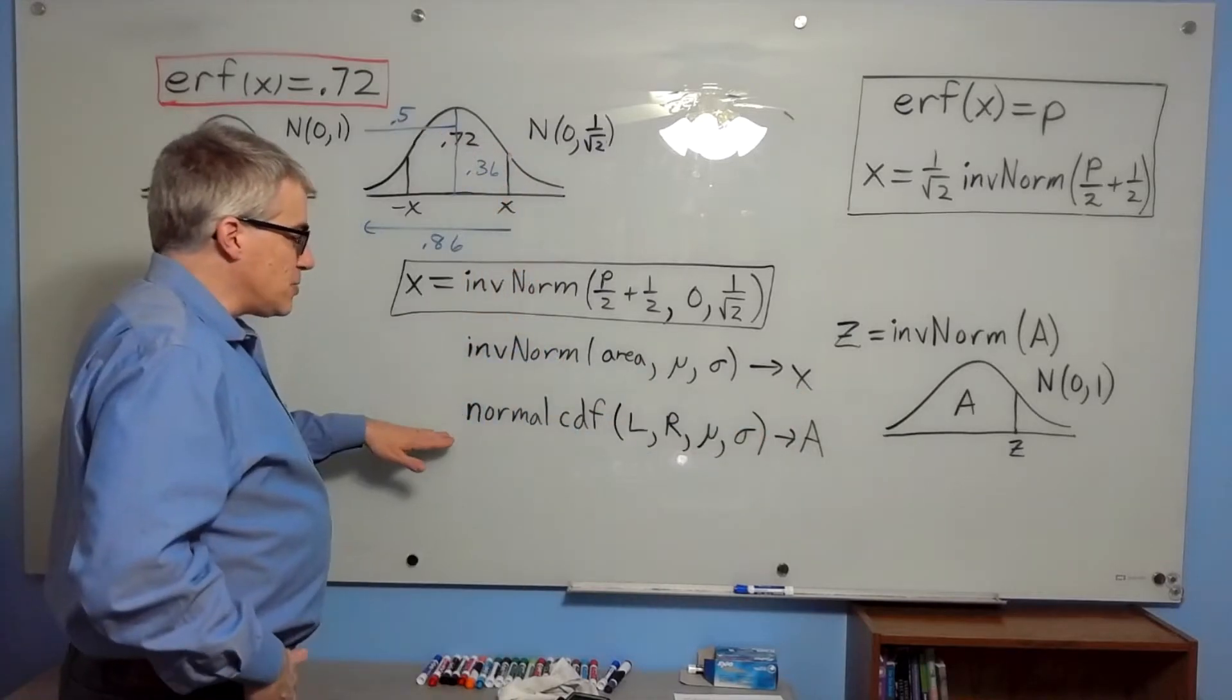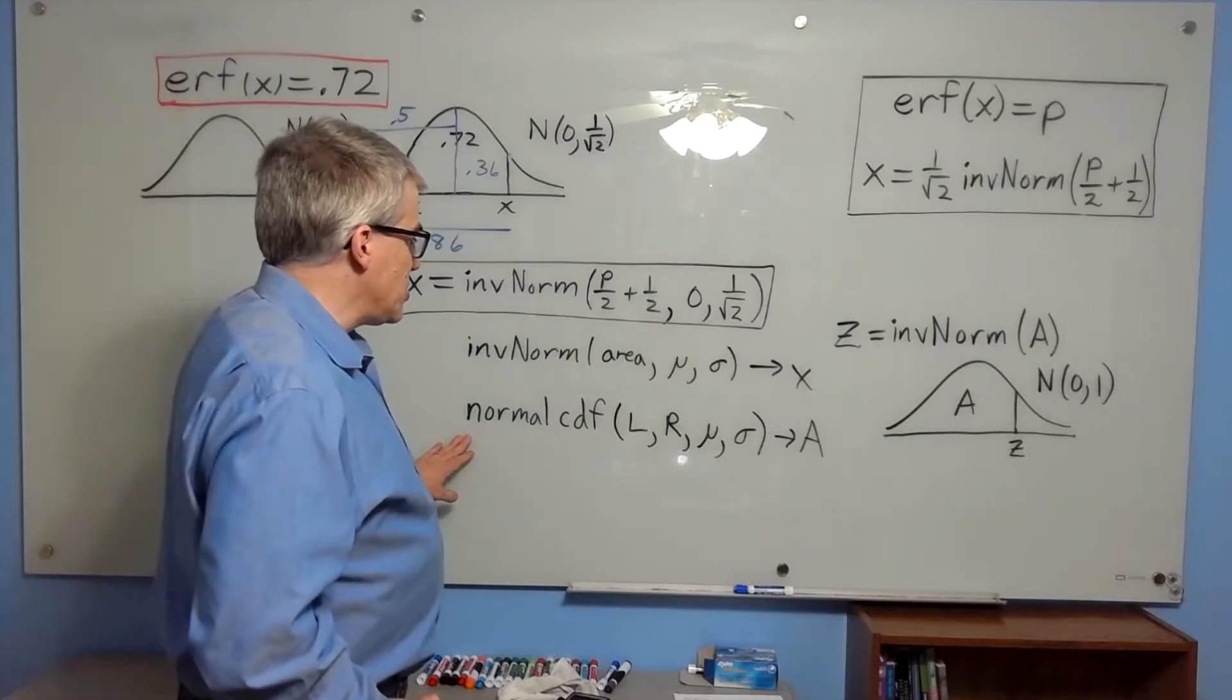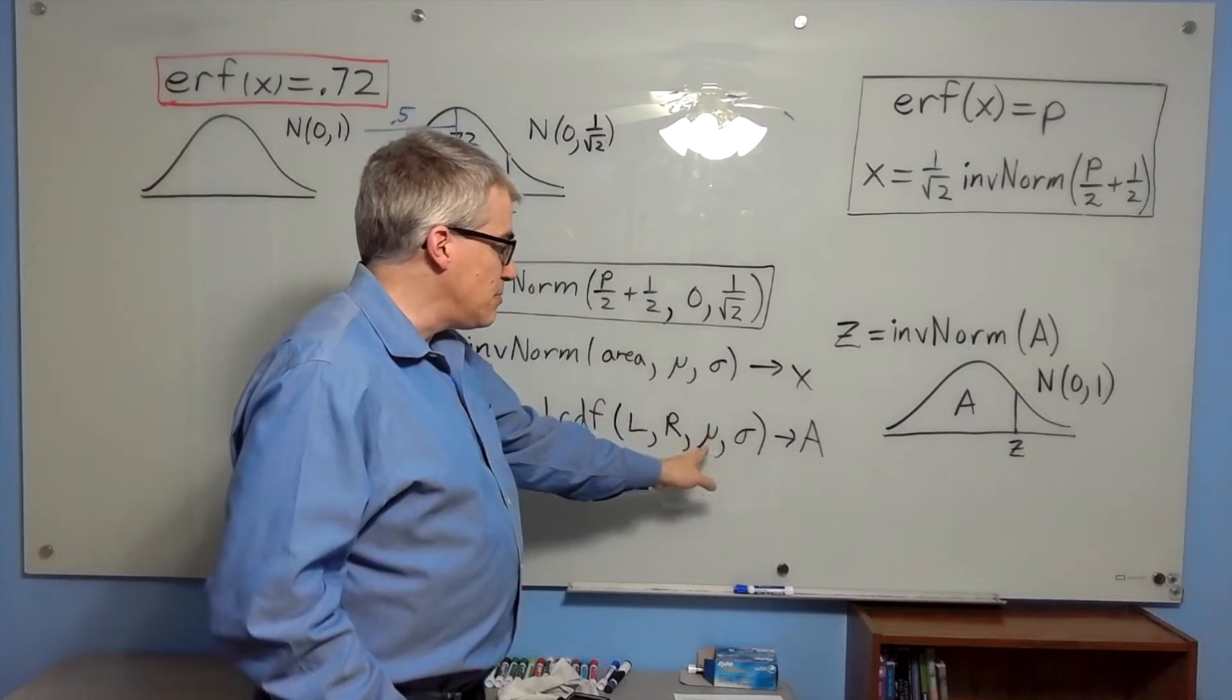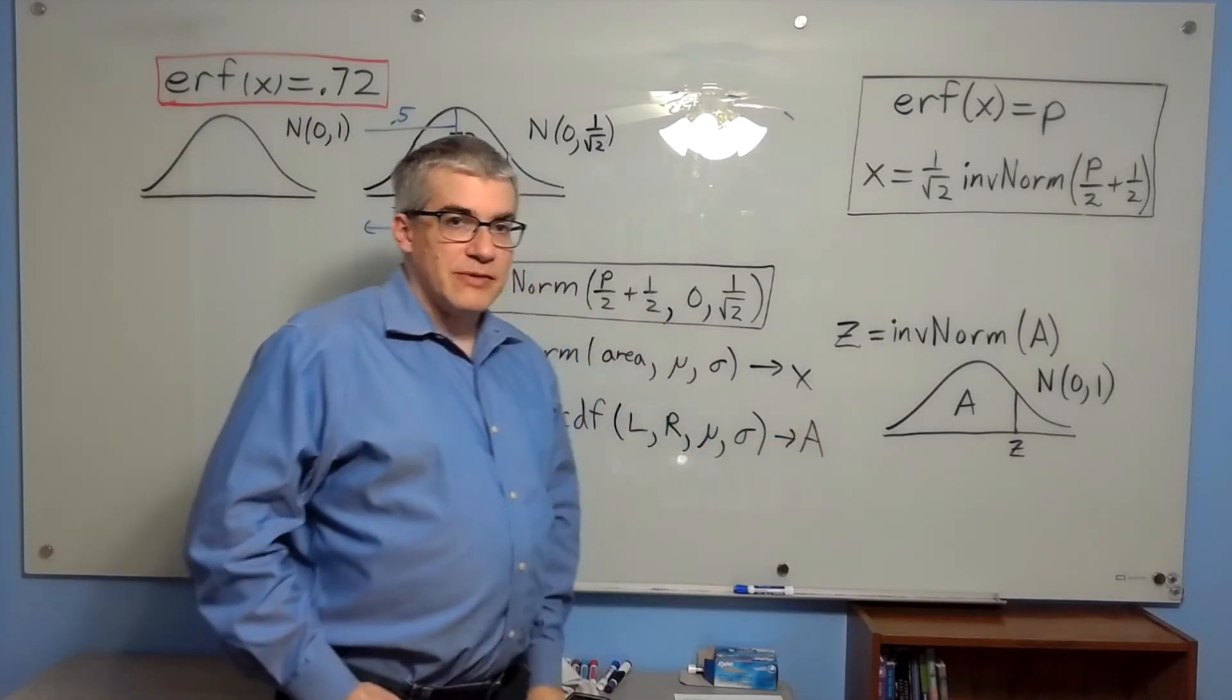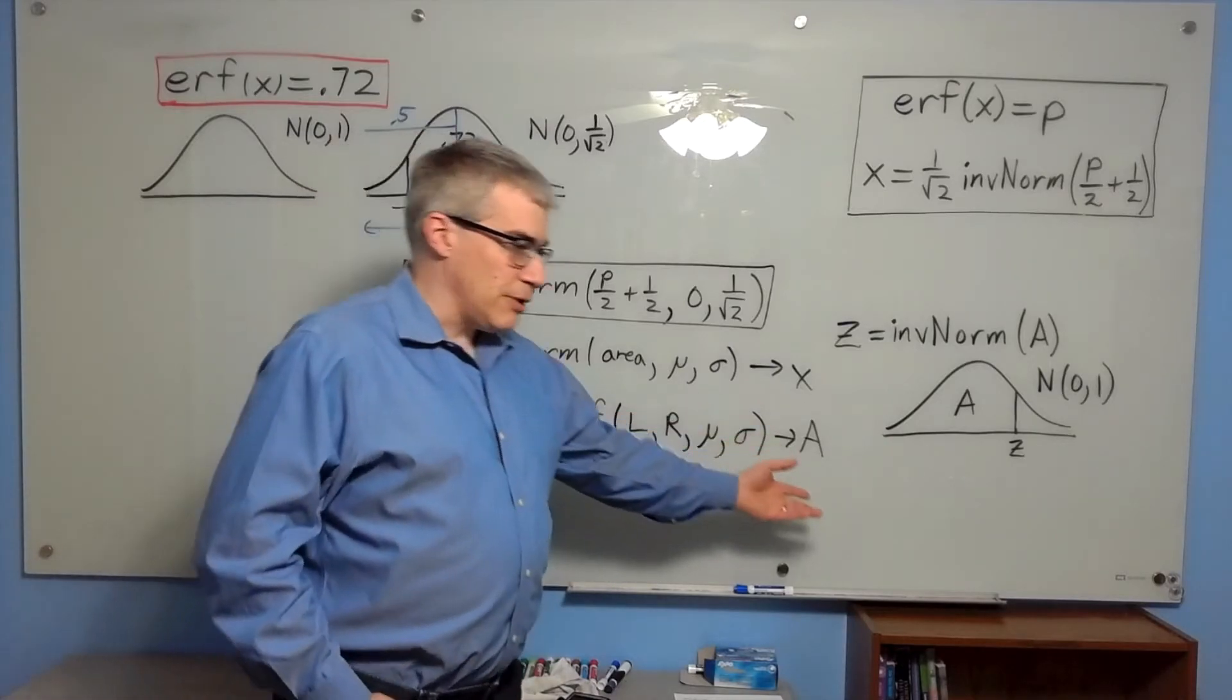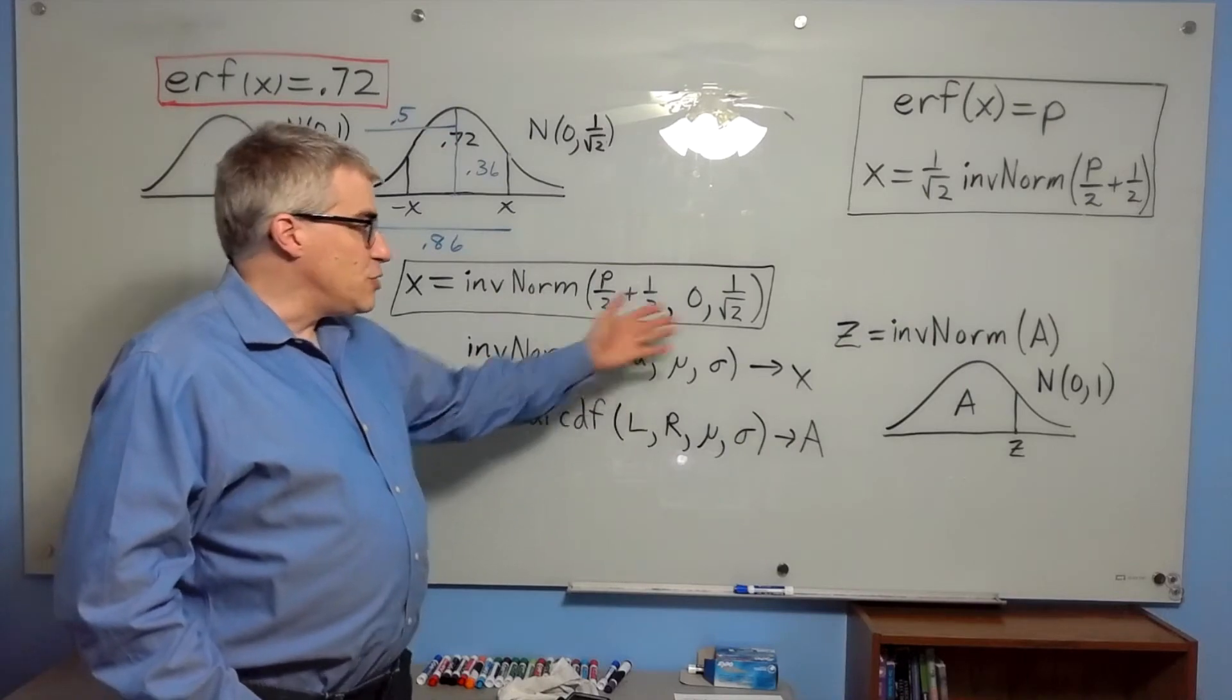The other way around, a normal CDF distribution is another option on the list. You put in the left edge and the right edge of whatever interval you want, the mean and the standard deviation, and that gives you the area in between. So the usual function gives you the area. The inverse function takes the area and gives you back the x.